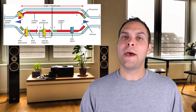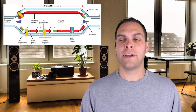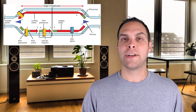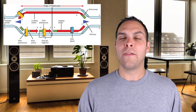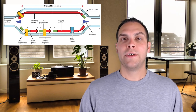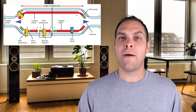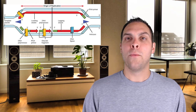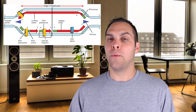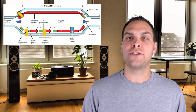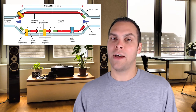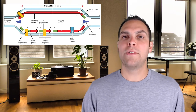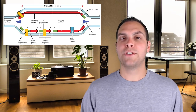At the opposite replication fork, with helicase working in the opposite direction, the leading strand and the lagging strand switch. The orientation of the DNA molecules didn't change at all, but because the replication fork is opening in the opposite direction, what is the lagging strand on one side of the origin is actually the leading strand on the other — simply due to the fact that the replication forks are opening in opposite directions.